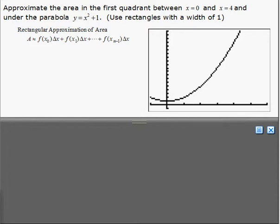In this example, we're asked to approximate the area in the first quadrant between x equals 0 and x equals 4 and under the parabola y equals x squared plus 1 using rectangles with a width of 1. So here we're attempting to use the rectangle rule to approximate the area under the curve. Between 0 and 4 means we're trying to find the area in here using rectangles.